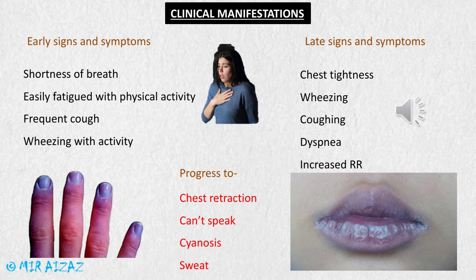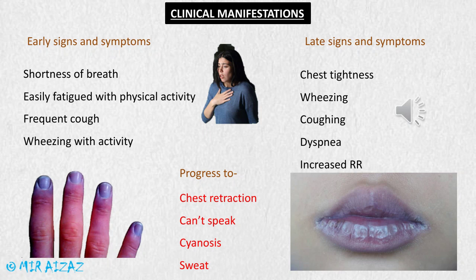In chest retraction, the stomach is sucked in and the rib cage protrudes out because the patient is not able to breathe normally. The patient cannot speak in this condition. Cyanosis then appears, which is the bluish discoloration of the nail beds and mucosal membranes, easily visible on the lips and nail beds. Cyanosis is a sign of decreasing levels of oxygen in the blood, and the patient may also start to sweat profusely.